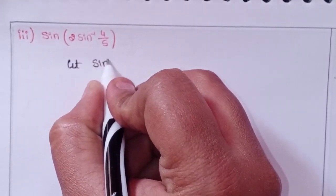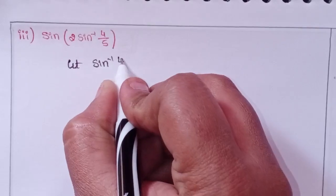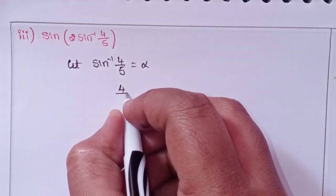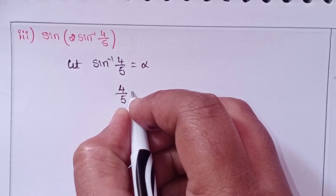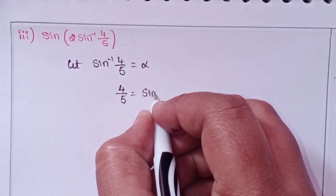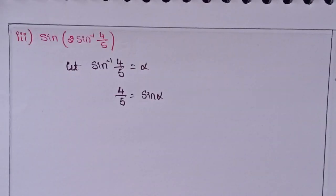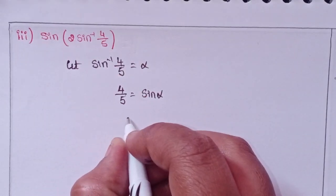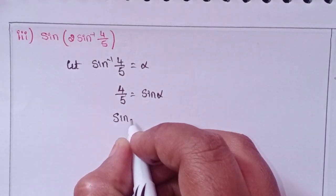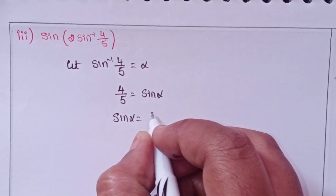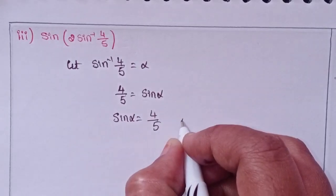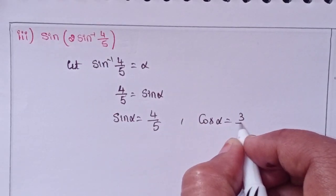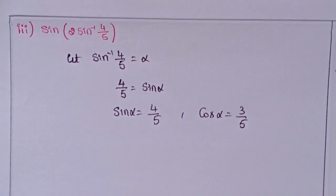Third problem: let sin inverse 4 by 5 equal to alpha. So 4 by 5 equals sin alpha, meaning sin alpha equals 4 by 5. Automatically, cos alpha equals 3 by 5.